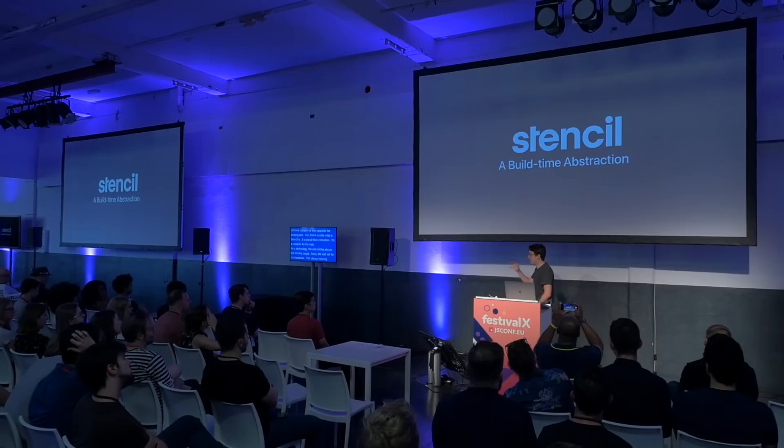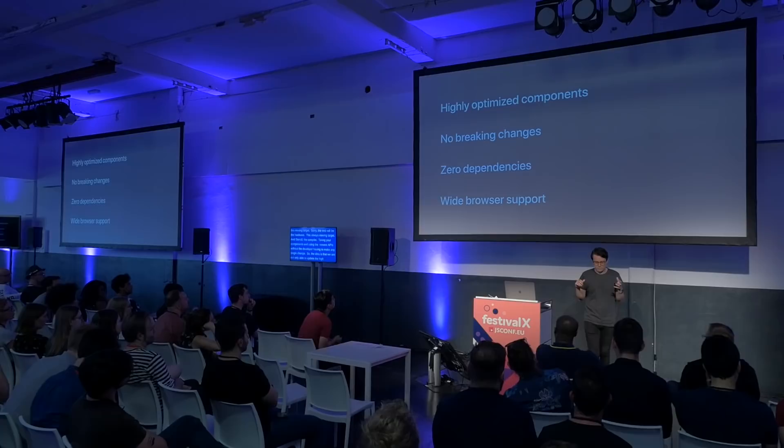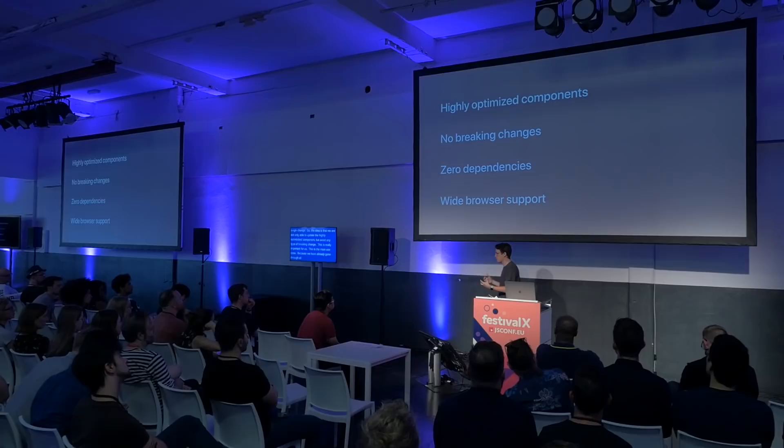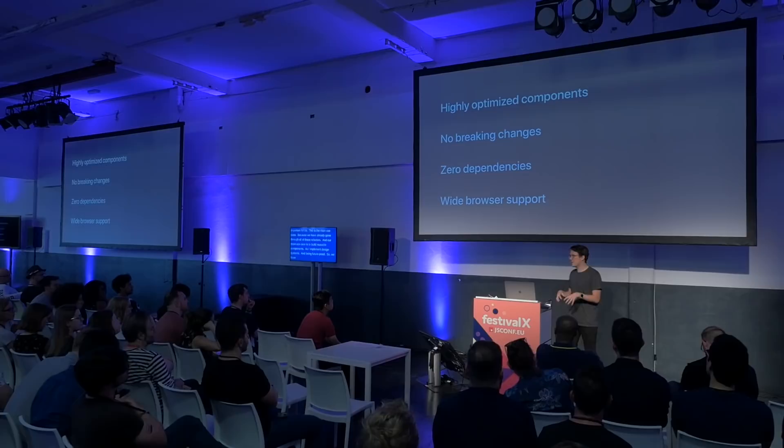The idea is that we're not only able to generate highly optimized components, but also avoid making any kind of breaking change — and this is really important for us. Our main use case is to build reusable components and implement design systems in a future-proof way. We have designed Stencil's compiler API to restrict ourselves to standard interfaces like classes, properties, HTML attributes, and DOM events, avoiding a 'Stencil way' of doing things. This way, we can keep changing how the compiler works and the optimizations we apply using new APIs without requiring developers to make any change.